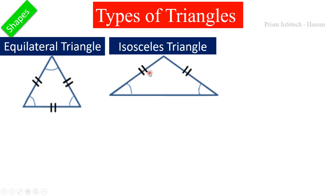In this triangle, only two sides are equal, so this is called an isosceles triangle.